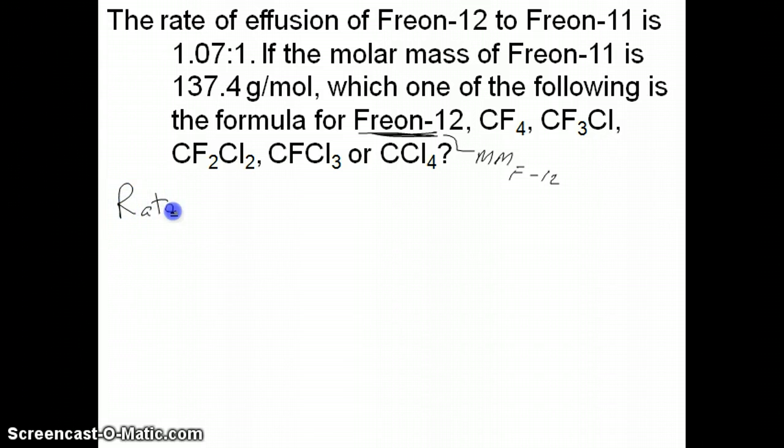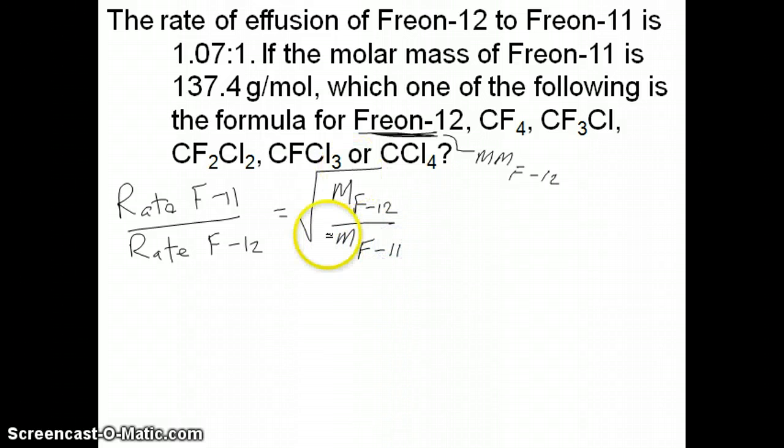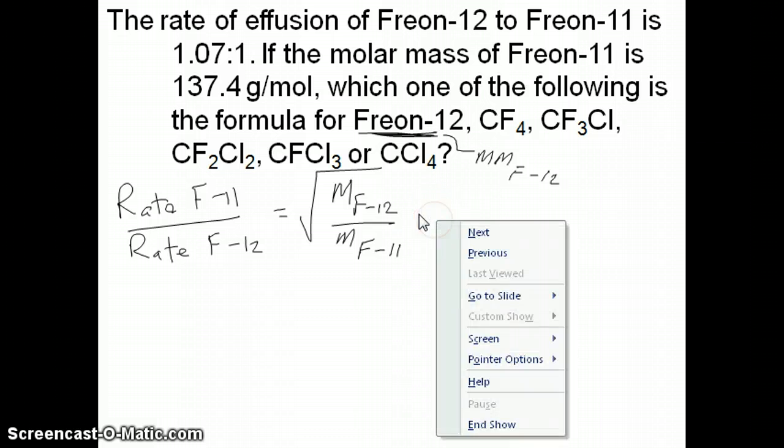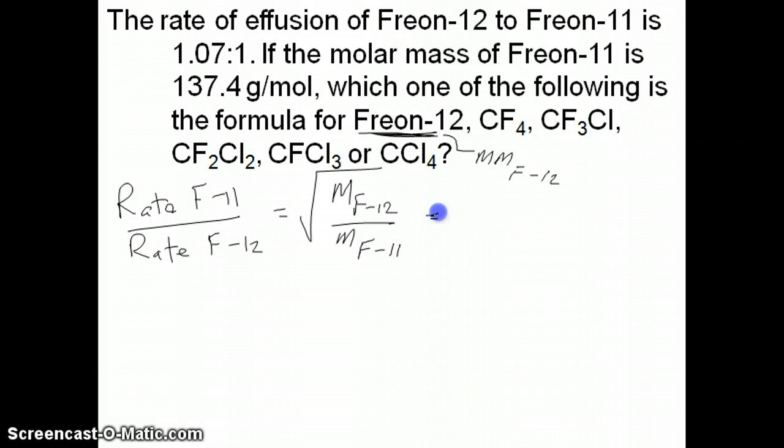We got rate of Freon 11 over rate of Freon 12 and that should be the molar mass of Freon 12 over molar mass of Freon 11. That's the way the relationship works for Graham's law. You can then do the calculation here by putting in your molar masses. We got Freon 12, that's really the one that we're trying to figure out, so let's just symbolize that by X here.